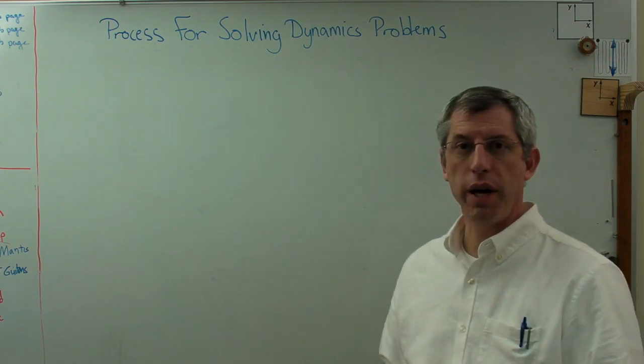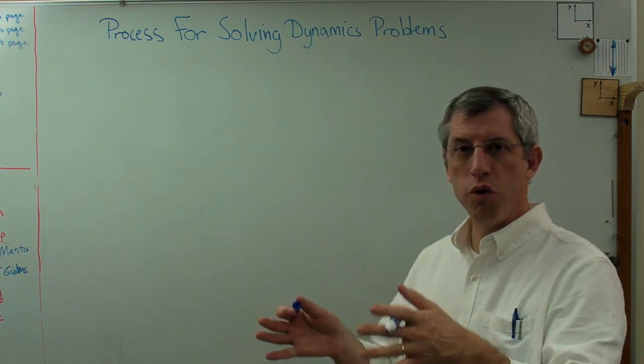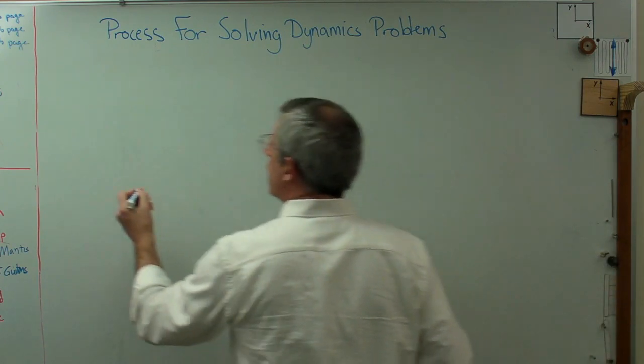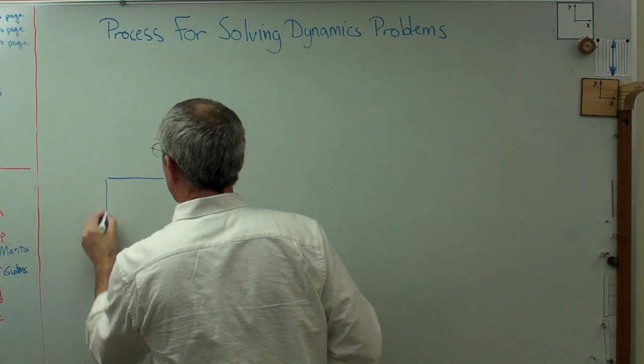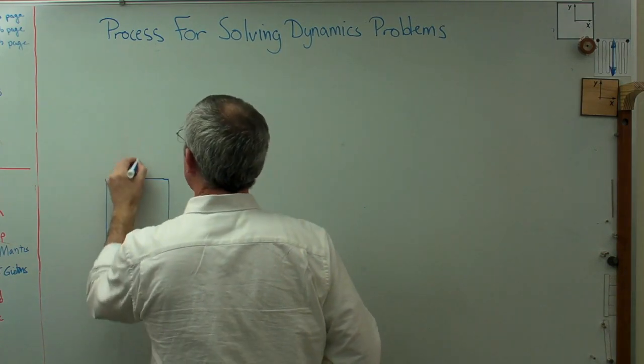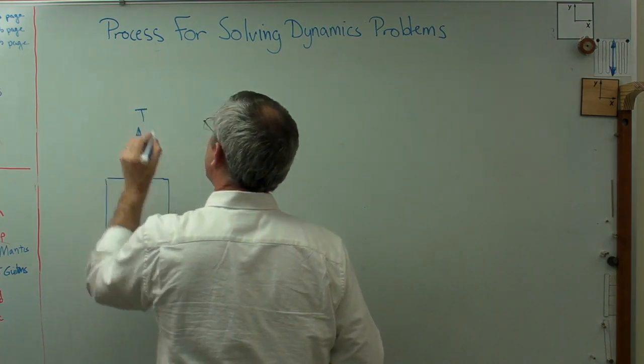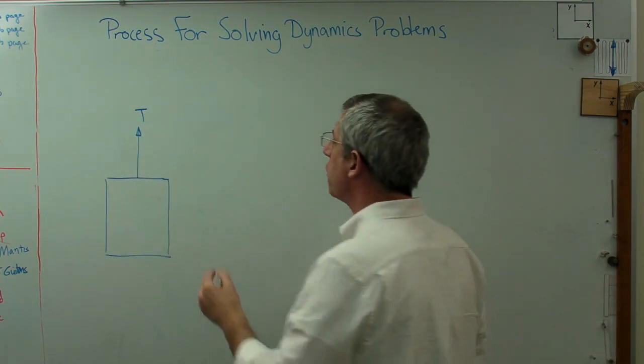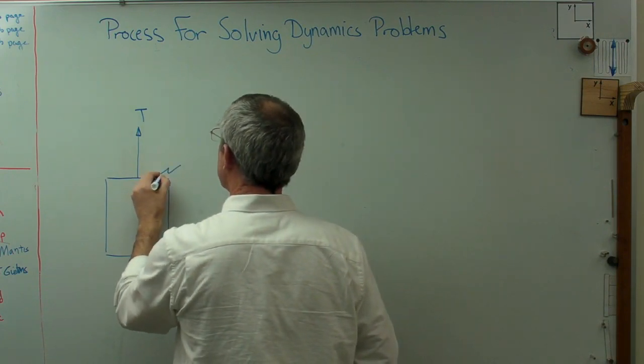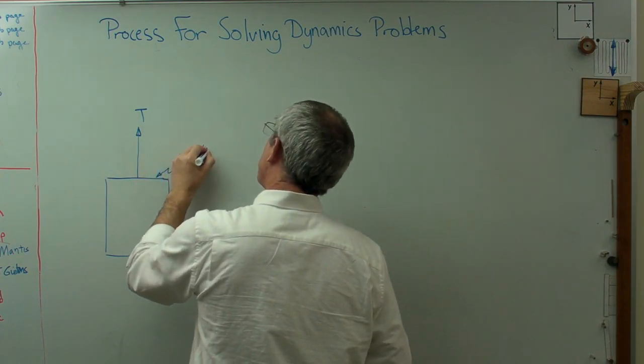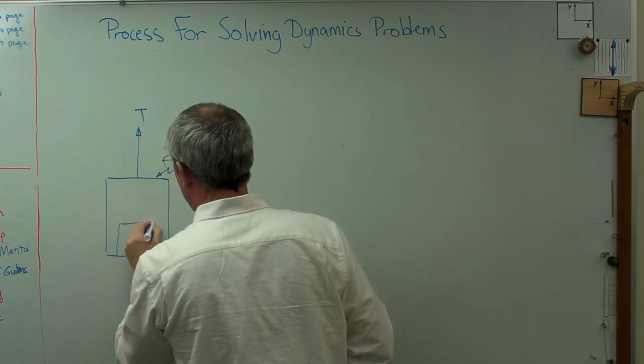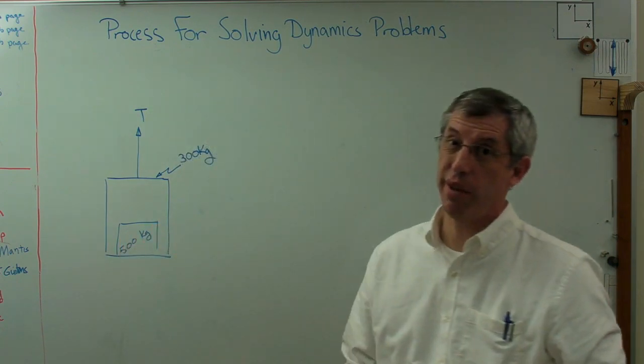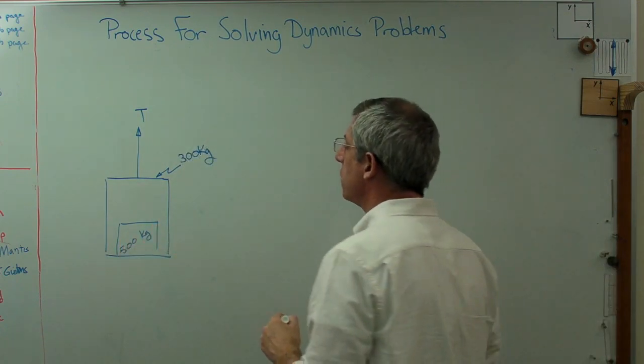So let's say we've got an elevator. Maybe it's a freight elevator designed to move big objects, big payloads, up and down in a building. It's basically a big box and it's got a cable pulling up on it with tension T in the cable. The structure of the elevator itself might be fairly substantial since it's designed to be used pretty hard. So we'll call that 300 kilograms. And there's a payload in here of 500 kilograms. The elevator's not worth much if it can't haul something.